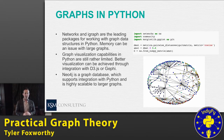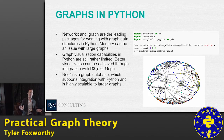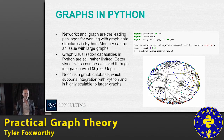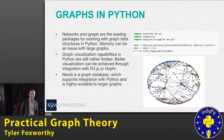Big problems with both frameworks is memory. Once you get into the couple-hundred-thousand node range on either one, even more so in IPython, it breaks down really quickly — the kernel will crash all the time.